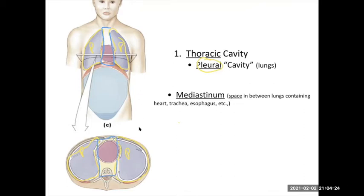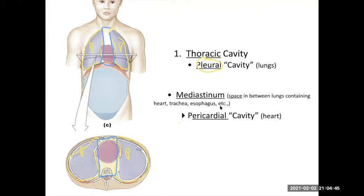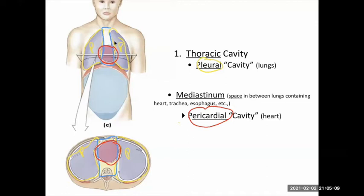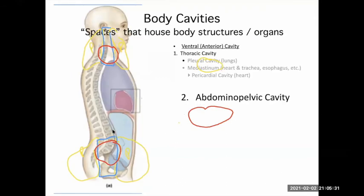In between the two lungs is the space called the mediastinum. That space contains your heart, trachea, esophagus, and large blood vessels. Within the mediastinum, the heart itself sits within the pericardial cavity — another sac that holds the heart. So within the thoracic cavity you have the pleural cavities for the lungs and the pericardial cavity for the heart.